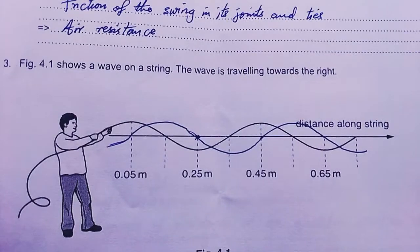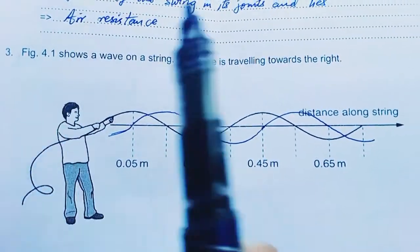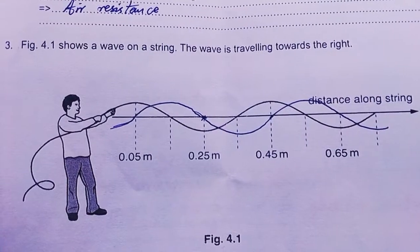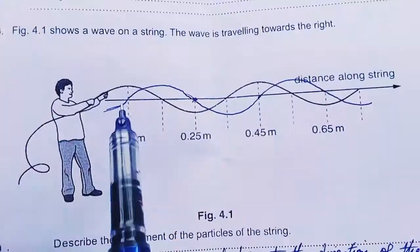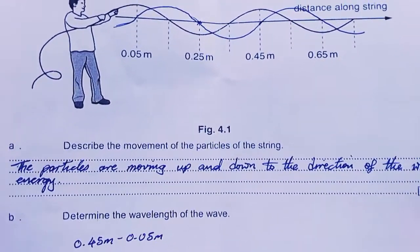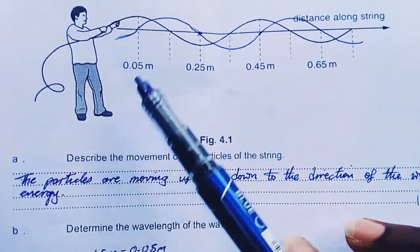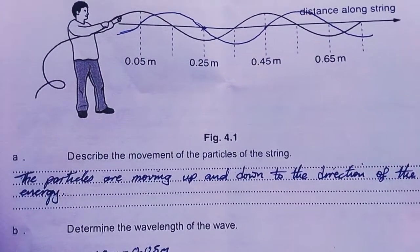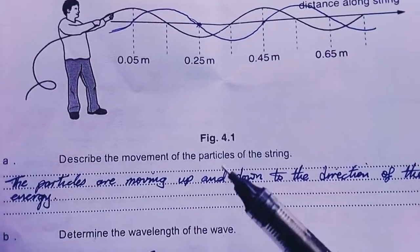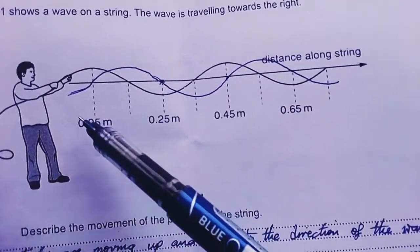Number three: figure 4.1 shows a wave on a string. The wave is traveling towards the right. This guy is flipping the rope up and down and it creates a wave traveling towards the right. Describe the movement of the particles in the string. As you can see, he's not moving, he's just swinging the rope up and down. Therefore the particles are moving up and down to the direction of the wave energy. Therefore it's creating a transverse wave.